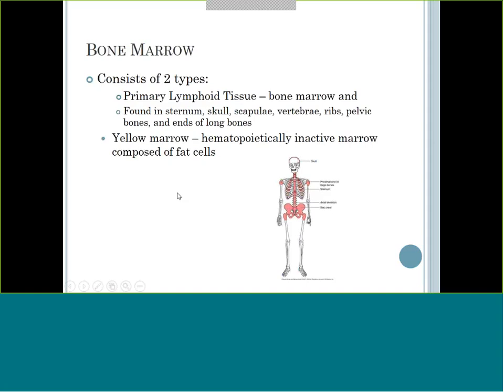Your bone marrow will have the red marrow, which is where you are actively making your cells - the hematopoietically active marrow. On the skeleton diagram, the red marrow would be the sternum, skull, vertebrae, ribs, pelvic bones, and ends of your long bones like the ends of your femur. Yellow marrow is anything composed of fat cells.